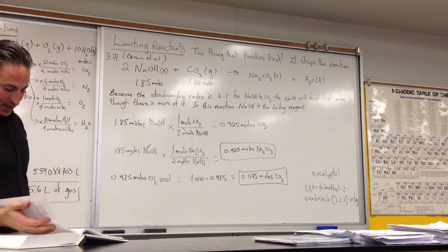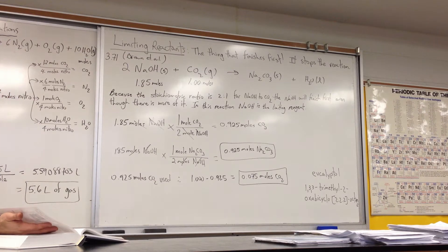Now, I want to see an example of that in question 3.71 in our text. It asks, sodium hydroxide reacts with carbon dioxide as follows. Two moles of sodium hydroxide plus a mole of CO2 gives you sodium carbonate solid plus liquid water. Which reagent is the limiting reactant when 1.85 moles of sodium hydroxide and 1.0 moles of CO2 are allowed to react?